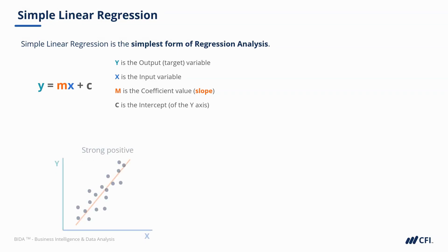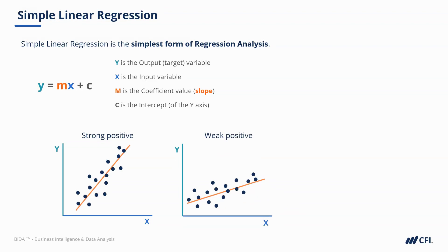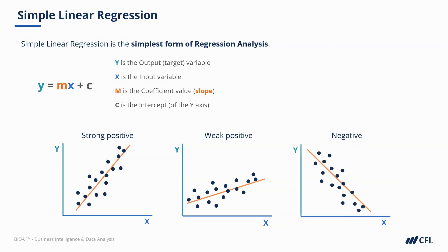If we have a positive slope coefficient greater than 1, this suggests a strong positive relationship between the input and target variables — a unit increase in x drives a more than one unit increase in y. If a change in x drives only a small change in y, the slope coefficient is smaller. Likewise, a negative slope coefficient suggests a negative relationship between input and target. In summary, the linear regression line of best fit is summarized by a straight line equation, and the coefficients help us understand the interaction between input and output variables.